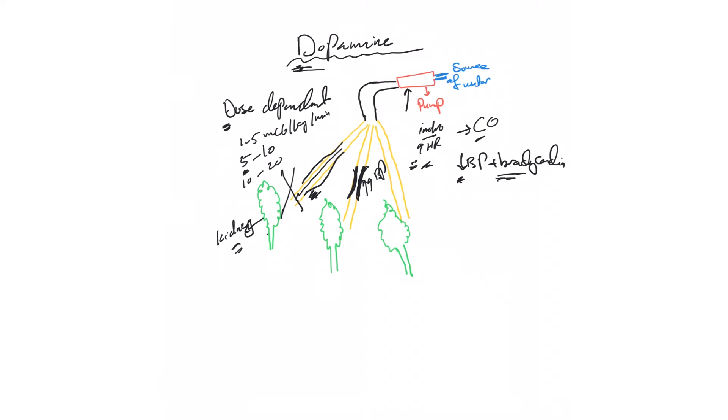So based on this, the use of dopamine as an alternative to levophed or norepinephrine usually starts at a dose above 5 mcg per kg per minute—and actually above 10. I would, if you're going to use dopamine to replace levophed, start at 10, especially in septic shock.